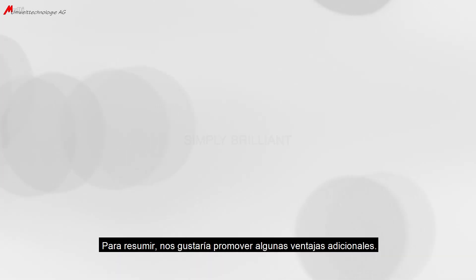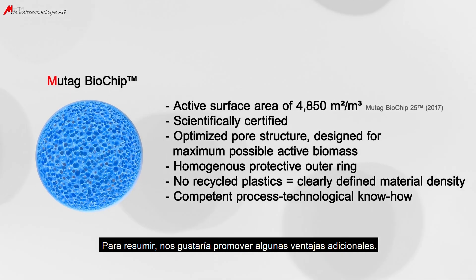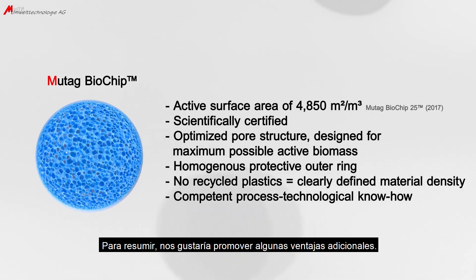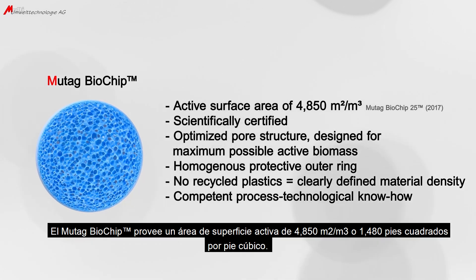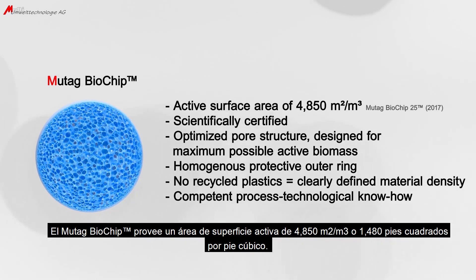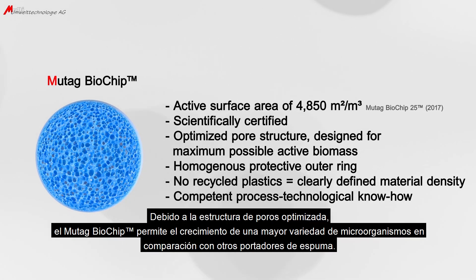To summarize, we would like to name some further advantages. The Mutag Biochip provides an active surface area of 4850 square meters per cubic meter. Due to the optimized pore structure, the Mutag Biochip can attach a manifold of active biomass compared to what other foam carriers can achieve.